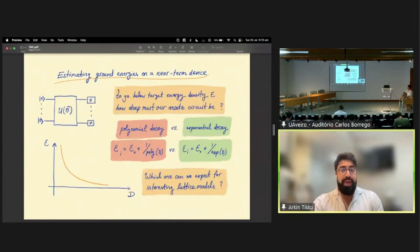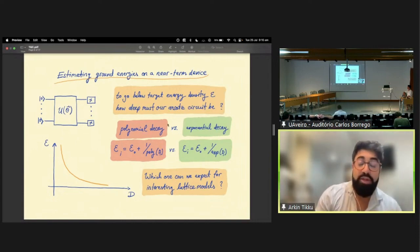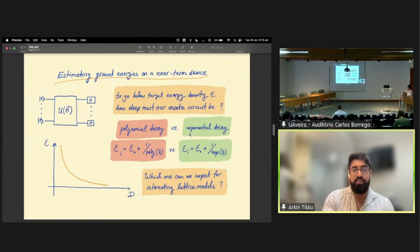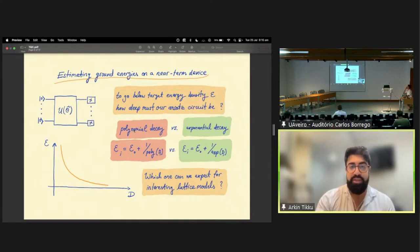Now, of course, one may ask, given a particular target energy density of the trial ansatz state, how deep must such a circuit actually be? Can we expect that the energy density of this ansatz state decays polynomially with the depth of the circuit ansatz, or does it even decay exponentially, which would be favorable? Of course, this will depend on the type of lattice model that we're considering. And so one may ask, what sort of behavior between these two can we expect for some interesting lattice models?